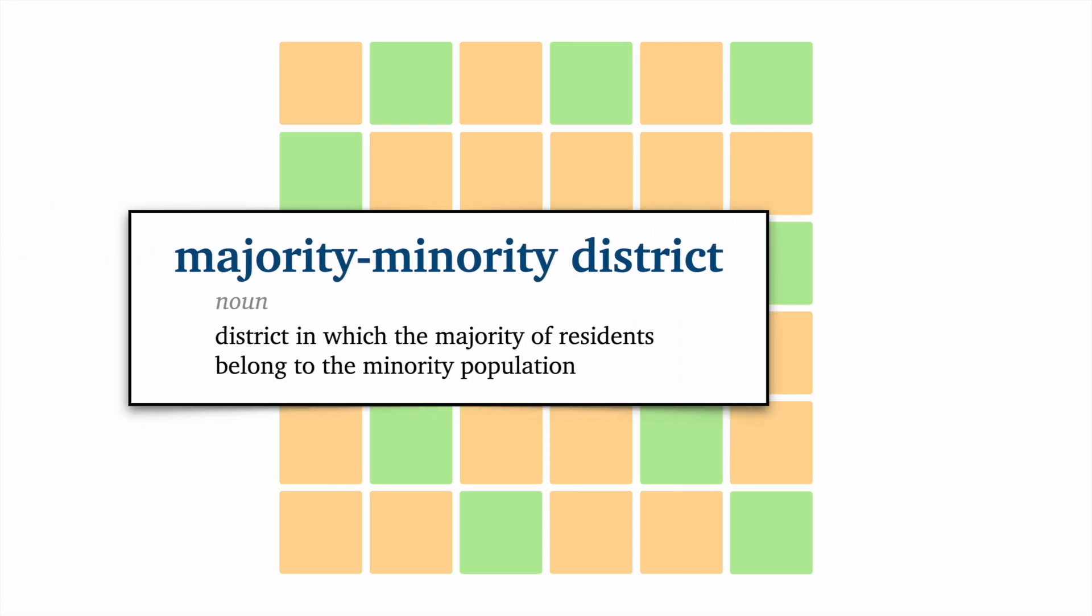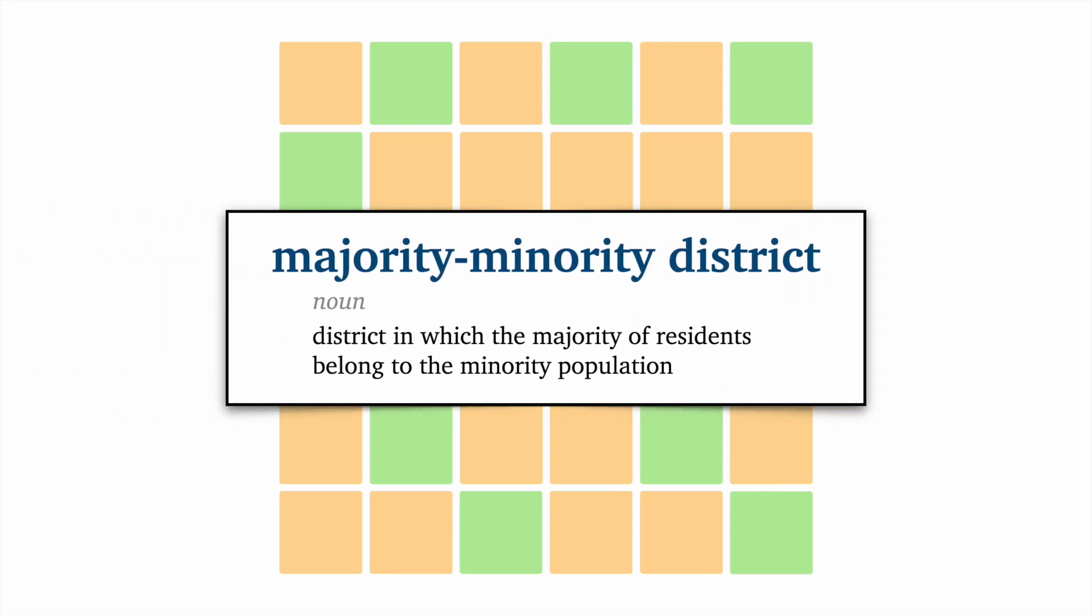You may be inclined to draw square districts, but suppose the 11 precincts in green make up a racial or political minority in the state. Then each square district ends up drowning out this minority population. And that doesn't seem right. In the spirit of representative democracy, we should try to draw a majority-minority district. Pause the video and visit waitbutwhy.com/gerrymander to find a connected district made up of five green precincts and four orange precincts.